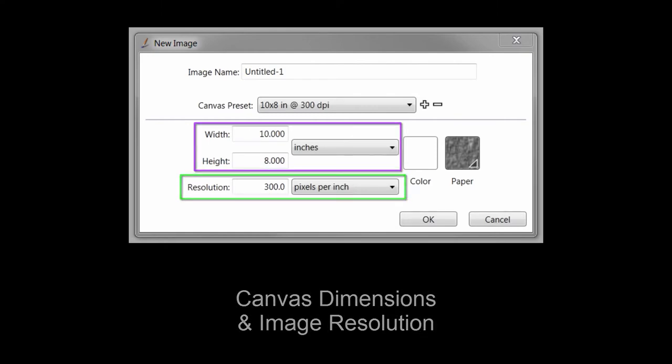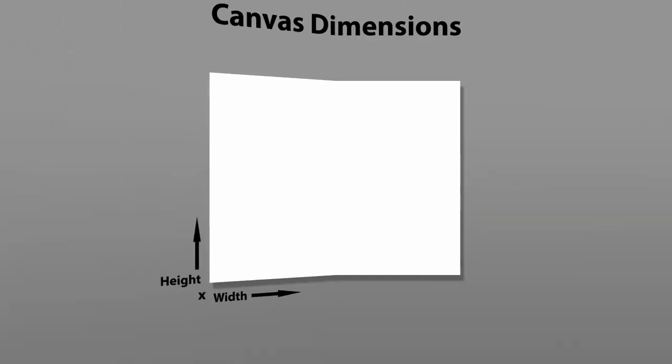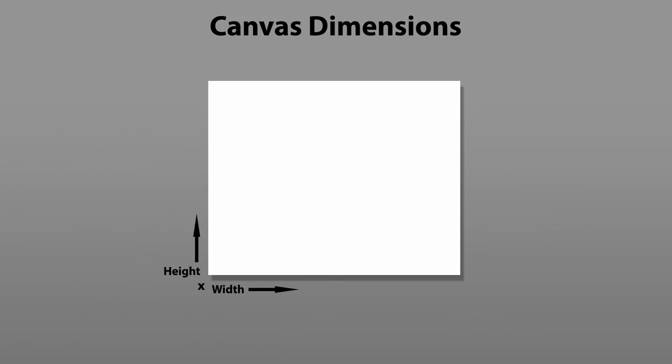The canvas dimensions define the height and width of an image. A canvas can be measured in either inches or pixels. Images displayed on a computer screen are more commonly measured in pixels, while for printed artwork the canvas is measured in inches and other units of measurement.